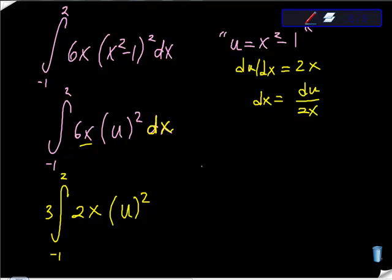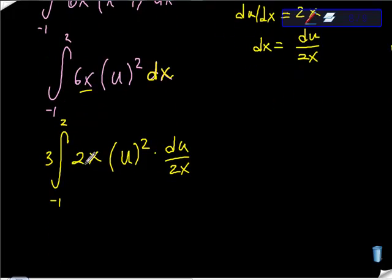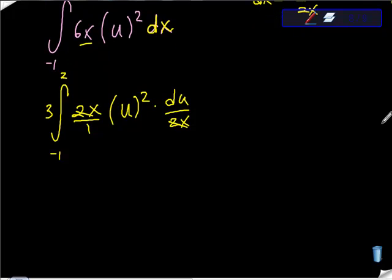I solve for dx here, right? And dx is this, so times du over 2x. Hopefully you can see this clearly, that what we have here is this in the numerator, this in the denominator, these things cancel. So hopefully you can see that we have 3 times u squared du.